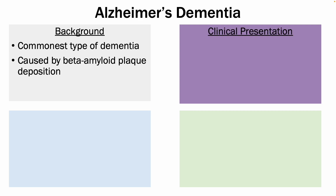In terms of the clinical presentation, I remember the four A's, which include amnesia, or the loss of memory; aphasia, or the difficulty with language and speech; agnosia, which is the inability to process sensory information; and apraxia, which is difficulties with motor movement.